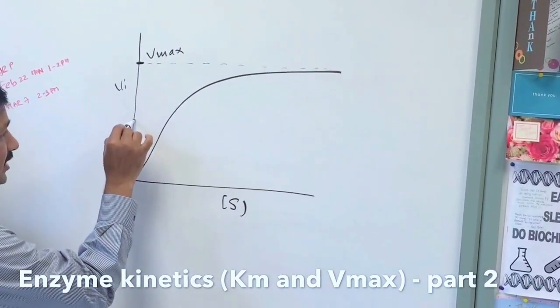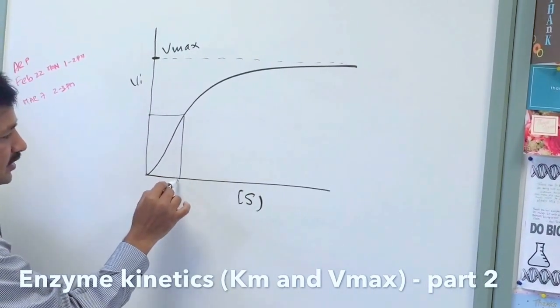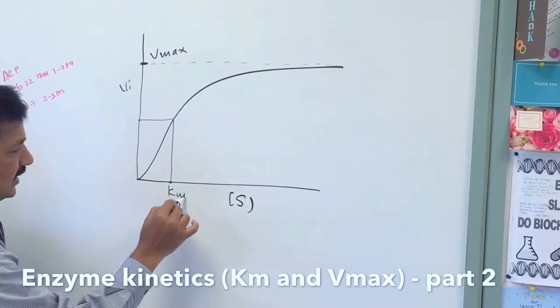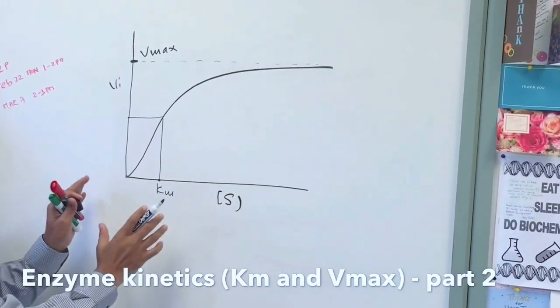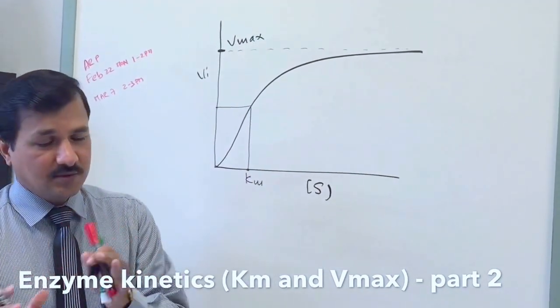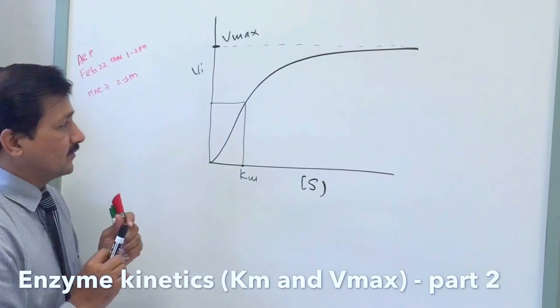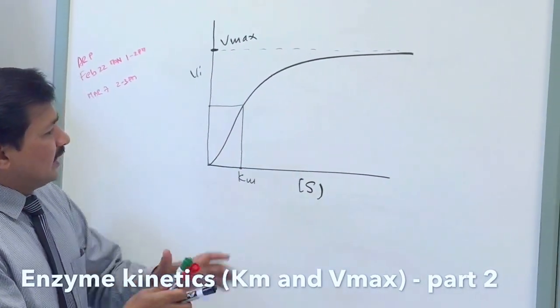Half of the maximum velocity taken and interpolate that line to the curve and then to the x-axis, and this point is called Km. This kind of video I have made in my previous presentation, so you can go to that to understand better.